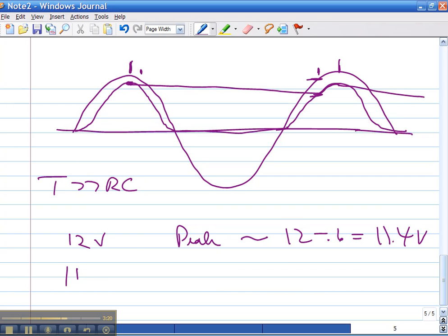Okay, so then the ripple is going to be about 11.4 times T divided by RC. For a 60 hertz sine wave, T is equal to 16.7 milliseconds.